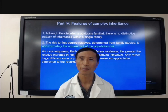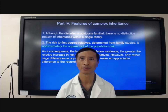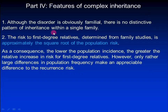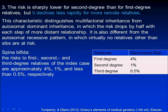Now let's move to part four: features of complex inheritance. First, although the disorder is obviously familial, there is no distinctive pattern of inheritance within a single family. Second, the risk to first degree relatives, determined from family studies, is approximately the square root of the population risk — this is based on experimental data. The risk is sharply lower for second degree than for first degree relatives, but it declines less rapidly for more remote relatives.